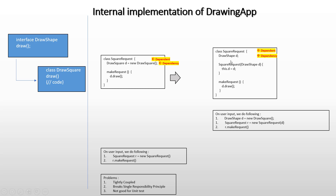Imagine the scenario where you have a class DrawBigSquare which extends DrawSquare and has a better implementation. If management decides to use DrawBigSquare instead of DrawSquare, the developer doesn't need to modify anything in the SquareRequest class. All the developer needs to do is modify the caller — instantiate DrawShape to have a new DrawBigSquare instead of DrawSquare, supply it to SquareRequest, and make a call to makeRequest. So this part of the code is not tightly coupled.